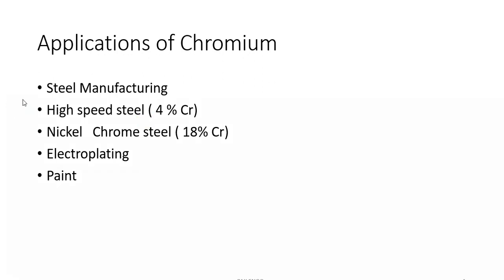Chromium is used in steel manufacturing, such as high speed steel and nickel-chromium steel. In high speed steel, 4% chromium is used, and in nickel-chromium steel, 18% chromium is used. It is also used in electroplating, which is a process of plating one metal onto another, mostly to prevent corrosion or for decorative purposes. Chromium is also used in paint to provide corrosion protection and reflective properties.